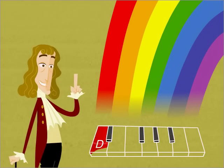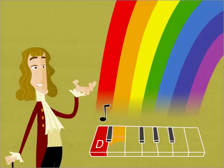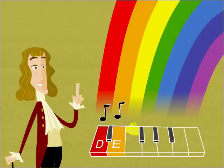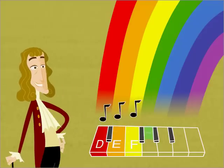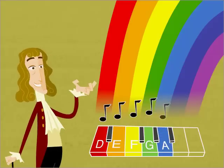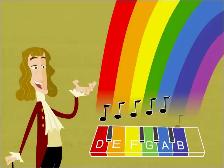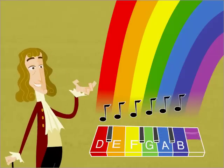Red as D. Orange as E. Yellow as F. Green as G. Blue as A. Indigo as B. And violet as C.